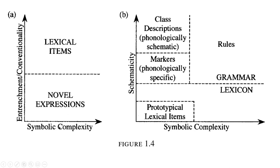Langacker's figures 1.4a and 1.4b show two axes: symbolic complexity and entrenchment/conventionality. Symbolic complexity refers to how many different phonological units and concepts are involved in a given expression — for example, the word 'moon' has very low symbolic complexity, whereas 'moonless night' is a little more complex, and an idiom like 'it's raining cats and dogs' has much higher symbolic complexity.